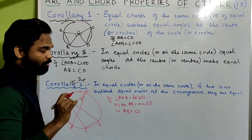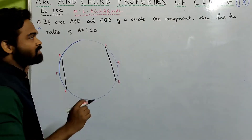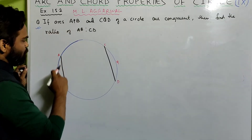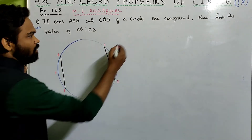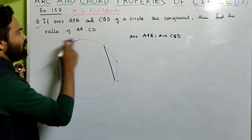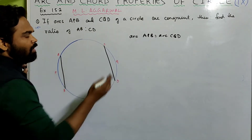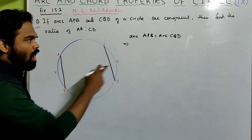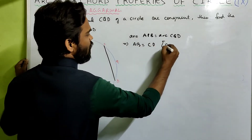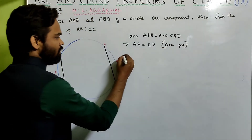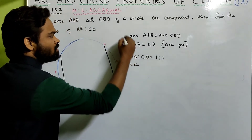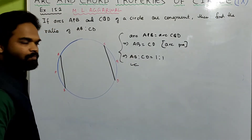Now let us solve sums from XI 15.2, Level 1. Sum number 1: if arcs APB and CQD of a circle are congruent — meaning equal — so arc APB equals arc CQD, find the ratio AB to CD. We know that if two arcs are equal in length, then the chords are equal, which means AB equals CD by arc property. So the ratio AB to CD is 1 to 1.